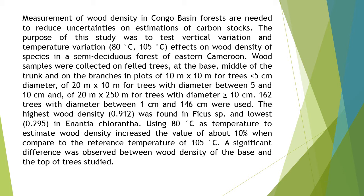The highest wood density, 0.912, was found in Ficus sp., and the lowest, 0.295, in Enantia chlorantha. Using 80 degrees Celsius as temperature to estimate wood density increased the value by about 10% when compared to the reference temperature of 105 degrees Celsius.